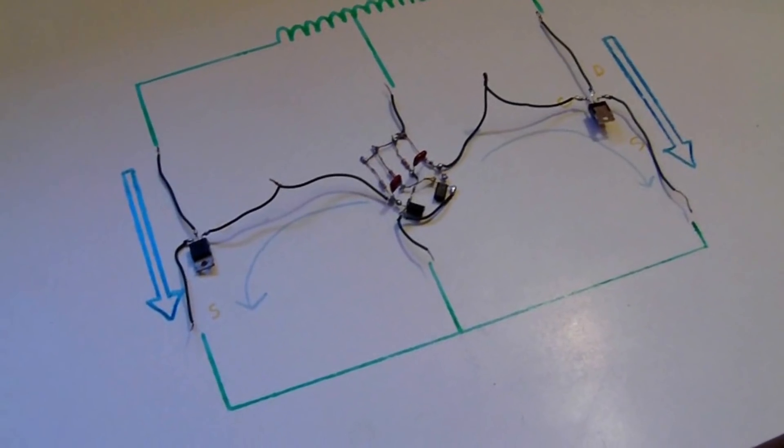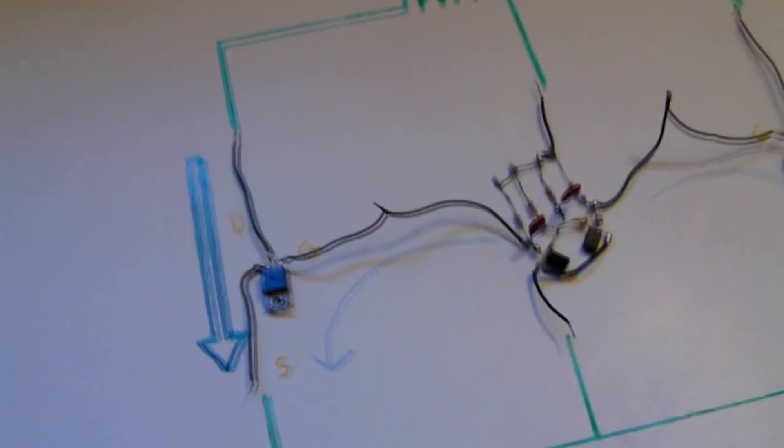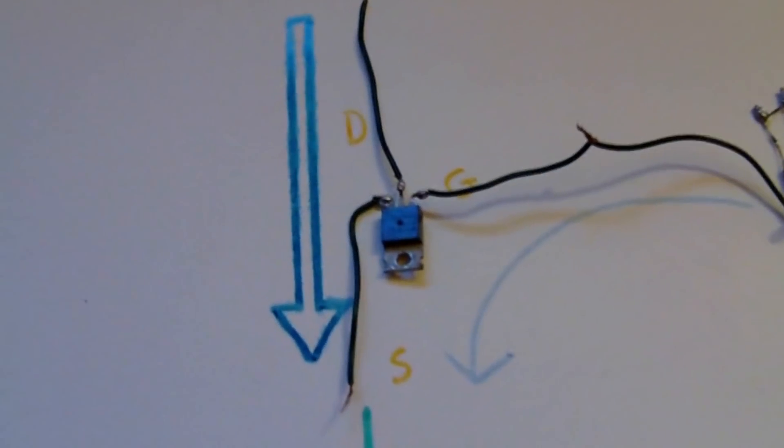We use MOSFET transistors for our inverter because they do not need the current to be activated, which doesn't affect the oscillator's working.